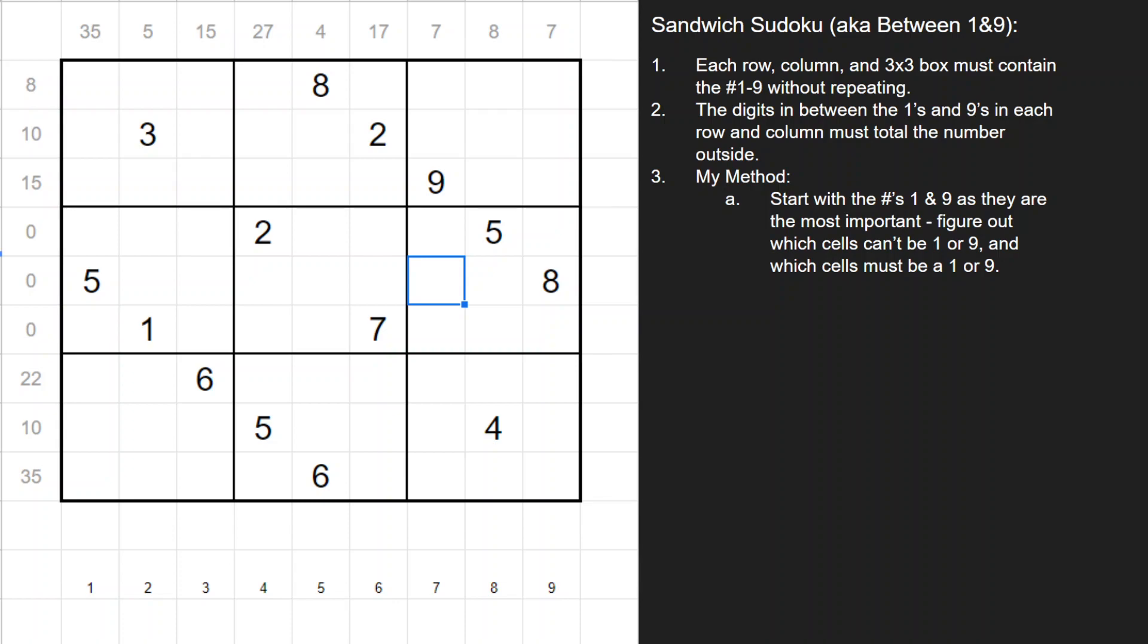The first thing that I start with are the 1s and 9s, as those are the most important. If you figure out which cells can't be 1s or 9s, then you can figure out which cells must be 1s or 9s. What I mean by that is if we look at this first column, it's 35, and 35 is the largest possible sum if you add 2 plus 3 all the way up to 8. So you know the 1 and 9 must have to be on the ends. Now I don't know which cell is the 1 and which cell is the 9, but I know it's in those two. So what I'll do is indicate those with an O, and all the cells that it cannot be I indicate with an X.